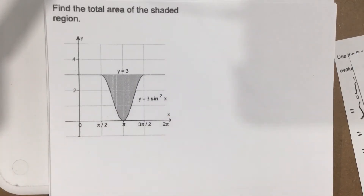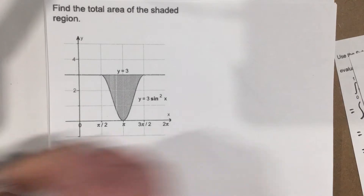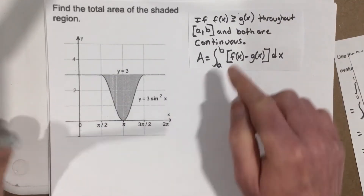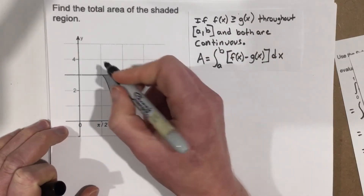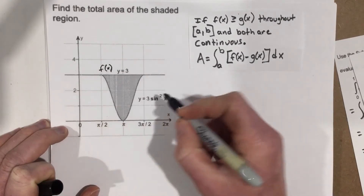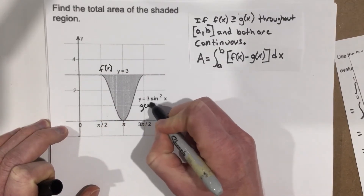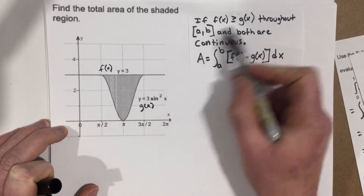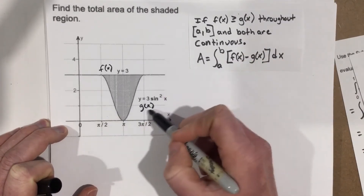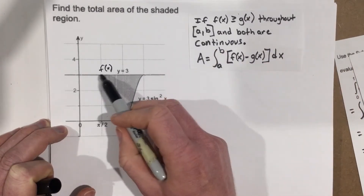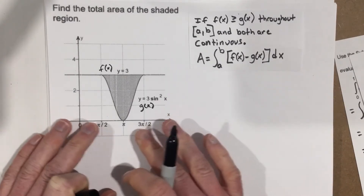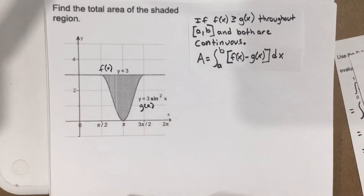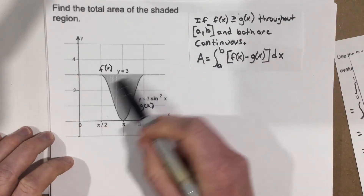This is something new that we haven't quite talked about before. We can say that if f(x) is greater than or equal to g(x) — I'm going to call this first function f(x) and this second function g(x) — so in our case, f(x) is greater than or equal to g(x) throughout an interval [a, b], meaning it's larger than g(x) throughout [a, b], and both are continuous.